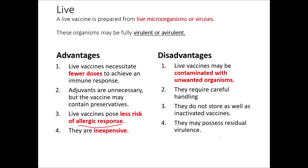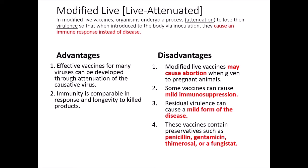Modified live or live attenuated vaccines undergo a process called attenuation to lose their virulence, so that when they're introduced to the body via inoculation, they cause an immune response instead of the disease. If you get sick from a modified live vaccine, it's not that you're getting the disease — it's that your body is responding to something foreign that's entered your body. These are effective vaccines for many viruses because it's just attenuation of that causative virus. The immunity is comparable to the response and longevity of killed products. They can cause abortion if given to pregnant animals — this would be the distemper vaccine, the feline distemper vaccine, or panleukopenia. They can cause some mild immunosuppression, and if there is any residual virulence, they could have a very mild form of the disease.